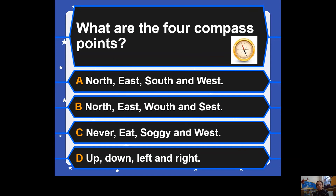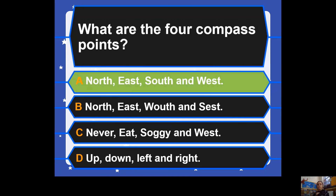Question twelve: what are the four compass points? Is it a) north, east, south, and west; b) north, east, wealth, and cest; c) never eat soggy and west; or d) up, down, left, and right? The answer is a — north, east, south, and west. Let's all point: north, east, south, west — well done!